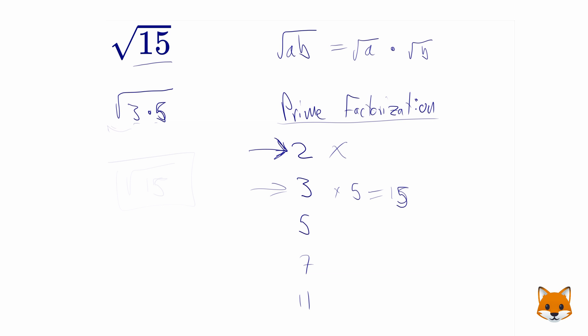But since we don't have a pair, in this case, square root of 15 is the simplest form that you can write this in.